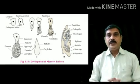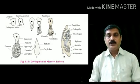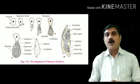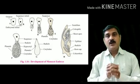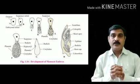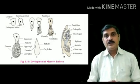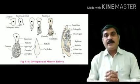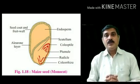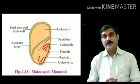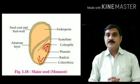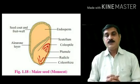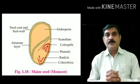The development of the monocot embryo is similar to the development of the dicot embryo up to the octant stage, but differences are observed later. In monocot embryo development, the plumule is present on one lateral side, while a single cotyledon is present at the terminal side. This single cotyledon is shield-shaped and is also known as the scutellum.